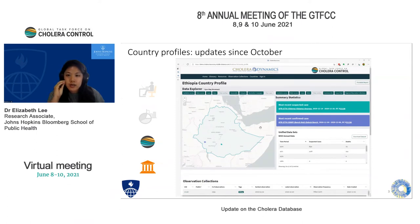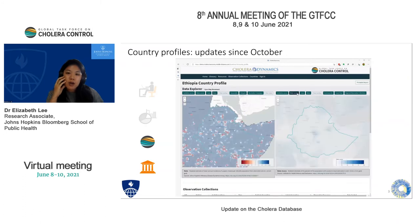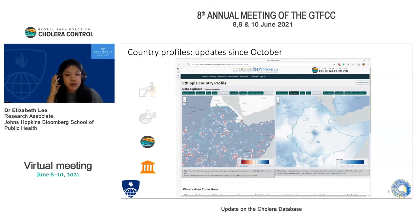We have summary statistics of what is included in our database. The most recent suspected case was reported in December 2020, as well as the most recent confirmed case in Ethiopia, also in December 2020. You can also see different kinds of figures: on the left, the mean annual incidence of suspected cholera cases from 2010 to 2016, which is a modeled estimate from our group published a few years ago.